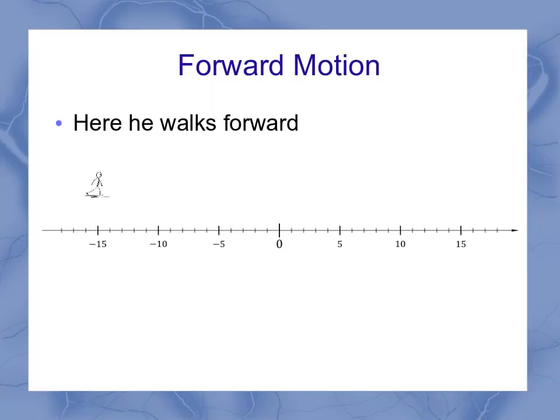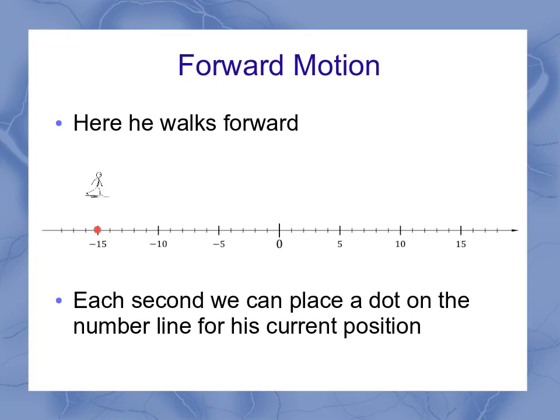So here we're starting out with some forward motion. So I've got Al, and for each second, I can represent where he is with the dot on the number line. As he walks forward, you see he's covering some distance. His position is changing, and so I've got a new dot for each second that he's moving.